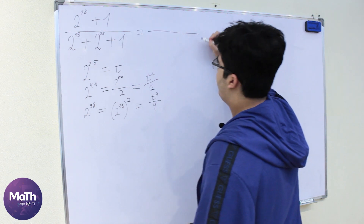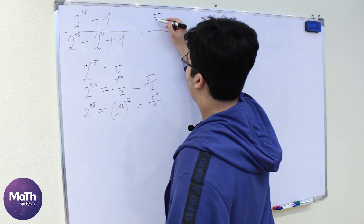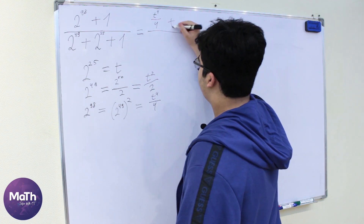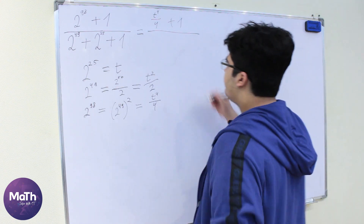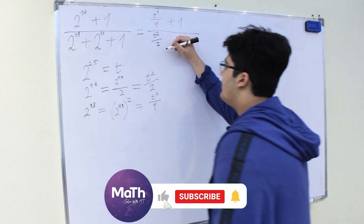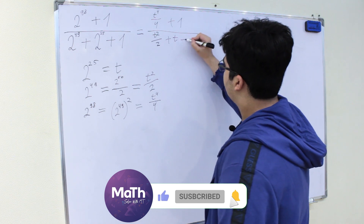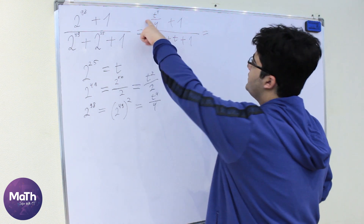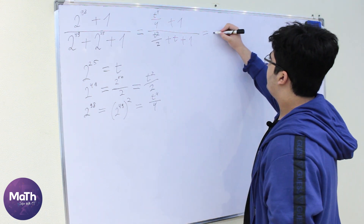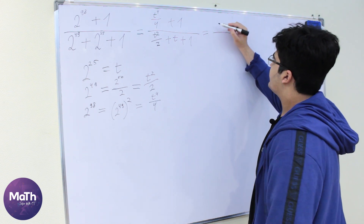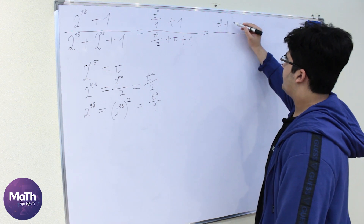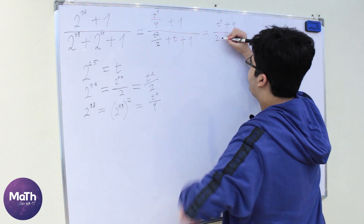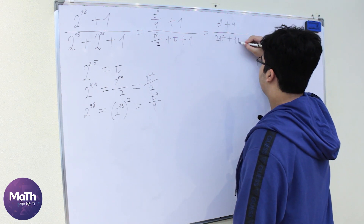So here we'll have t to the power of 4 divided by 4, plus 1 in the numerator. And here we have t squared divided by 2, plus t, plus 1 in the denominator. Let's multiply both numerator and denominator by 4, so we'll have t to the power of 4 plus 4 on top, and 2t squared plus 4t plus 4 on the bottom.